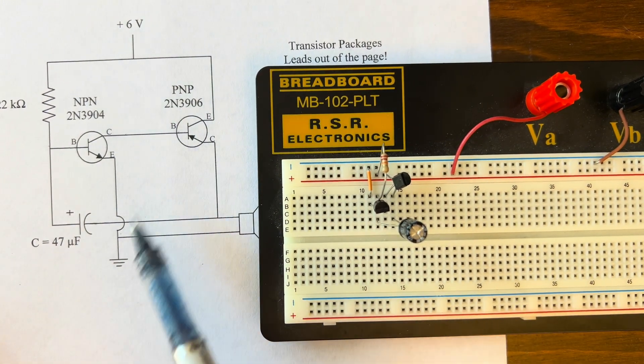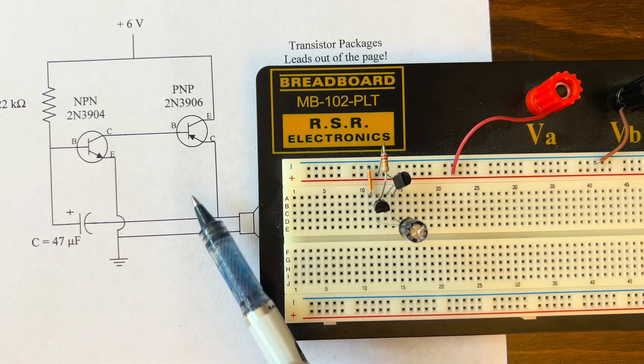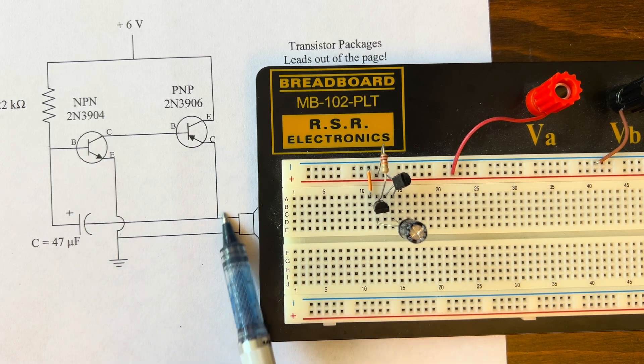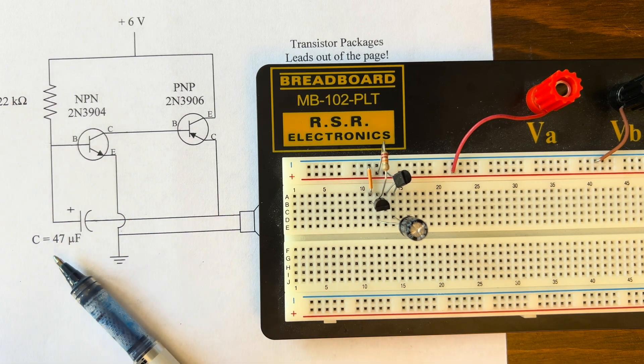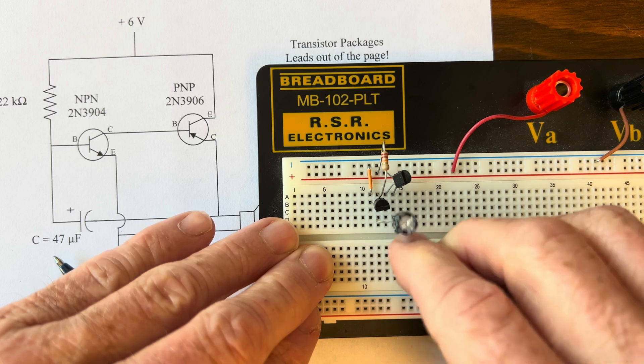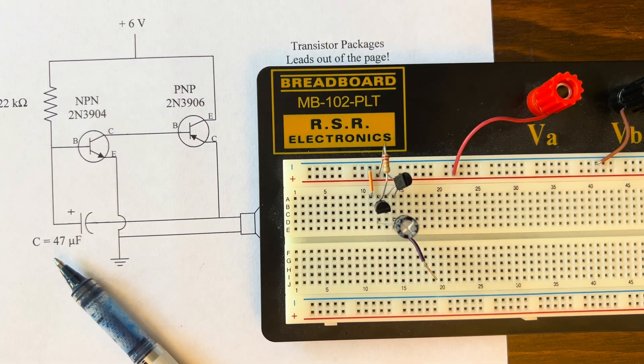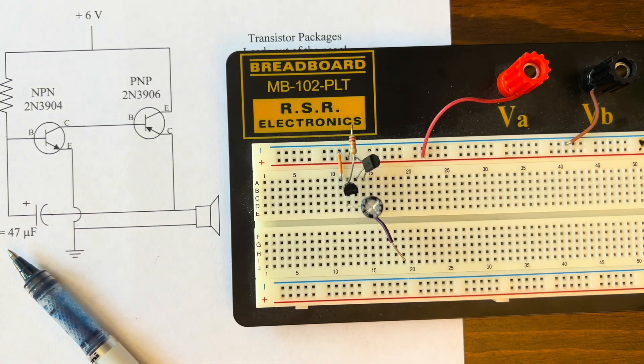So all I need to do here is now take that same collector junction with the capacitor to my speaker. So what I'm going to do is I'm going to put a purple right here. Purple, I'll make for sound. Okay. So I have a purple coming out and that's going to end up getting connected to my speaker.